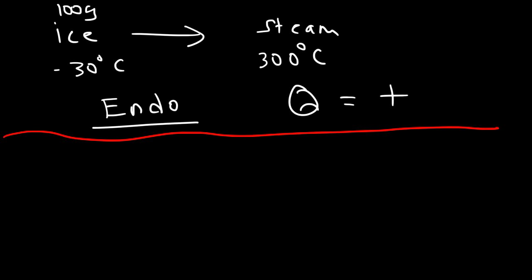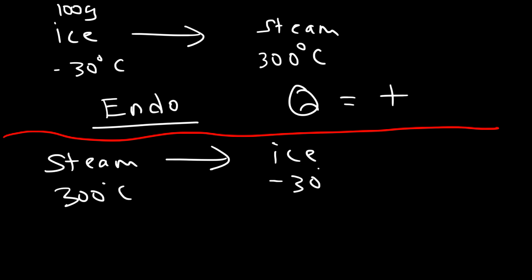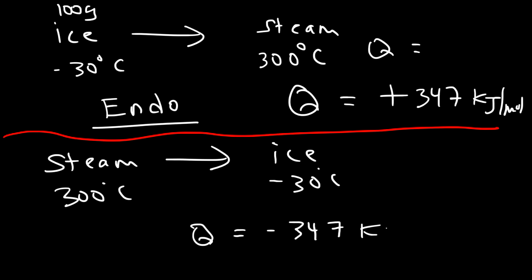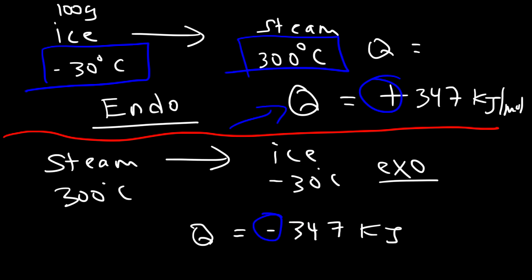If you're dealing with a cooling curve — going from steam back to ice, say from 300 to negative 30 — the magnitude of the answer stays the same at approximately 347 kilojoules, but the sign changes. Going from high to low temperature releases energy, making it an exothermic process, so Q is negative. If going from low to high temperature, the process is endothermic and the answer is positive.